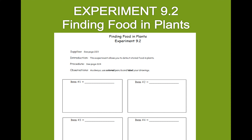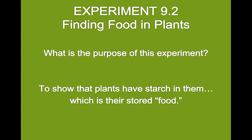This is part three of Mrs. Roth's general science lecture for module nine, week one. We're resuming here with doing experiment 9.2. So you should have your lab report and your colored pencils available to fill this out. This particular experiment is about finding food in plants.